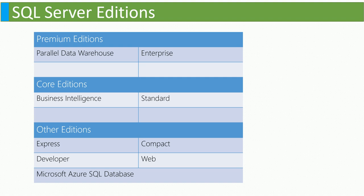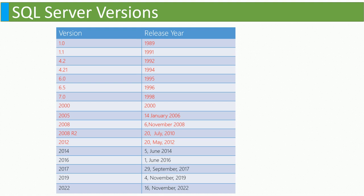We also have the Microsoft Azure SQL Database edition, for which I will create a separate video. Regarding SQL Server version history, it started in 1989 with version 1.0. Versions shown in red are unsupported and expired — you should not use them. From the 2014 version onward it is still running but will expire soon. The latest version is SQL Server 2022, released on November 16, 2022. You can also use 2019, but the best option is the latest 2022.